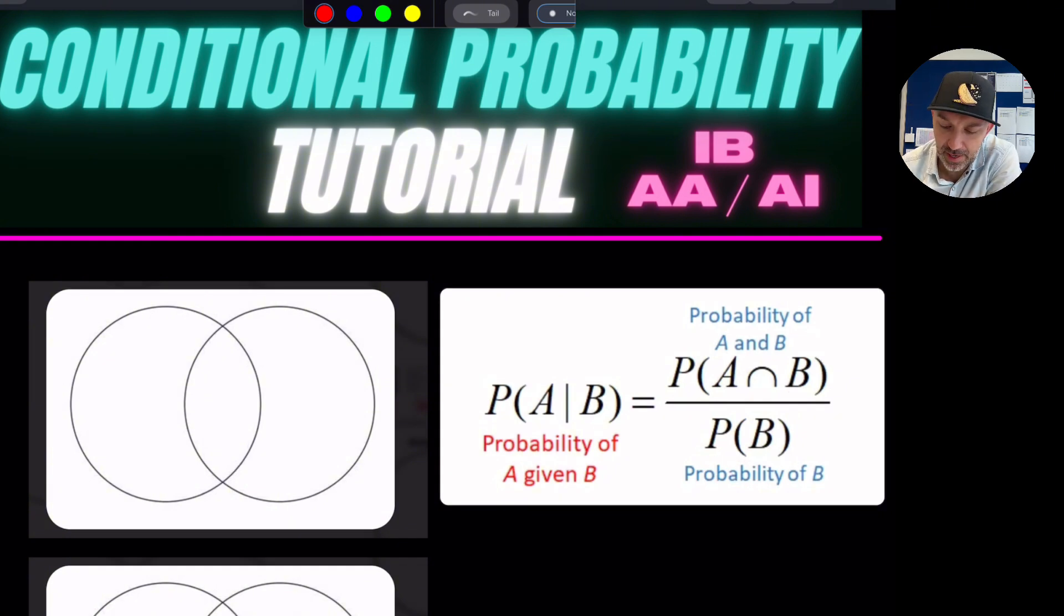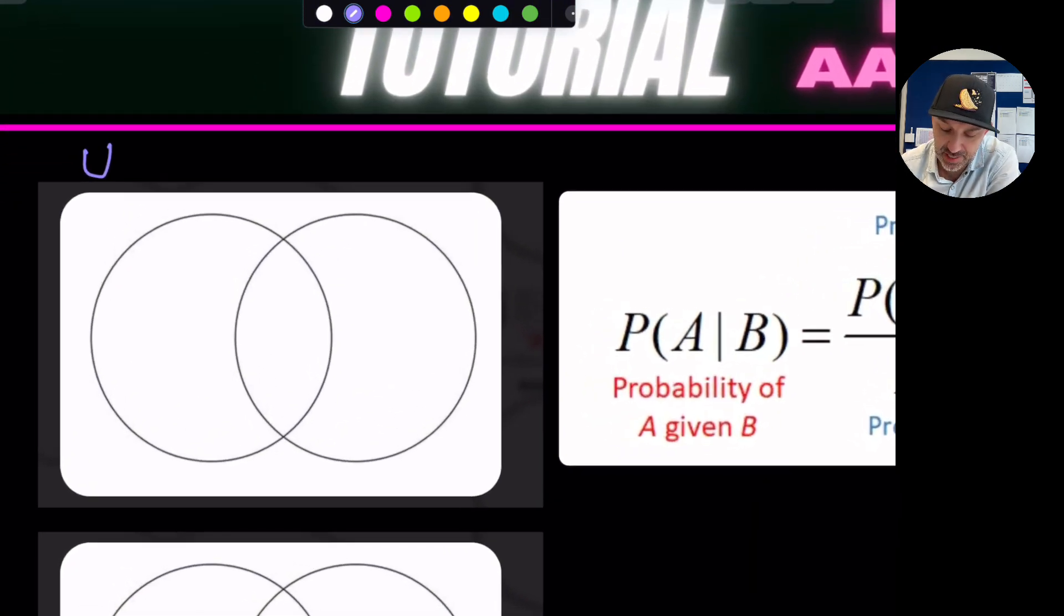Let's look at that more visually. Assume that we have a universal set. So this is a Venn diagram and if you want to know more about Venn diagrams watch my other video on this. But we have a universal set and in this set there are two instances where we will have event A and event B.